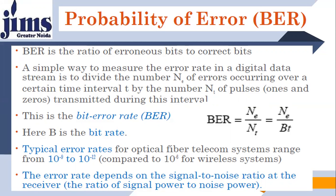A very simple way to measure the error rate in a digital data stream is to divide the number of error-occurring bits over a certain time interval T by the number N of pulses — the total pulses transmitted during that interval. In short, bit error rate is the ratio of number of bits that are in error upon total number of bits. This is bit error rate BT.